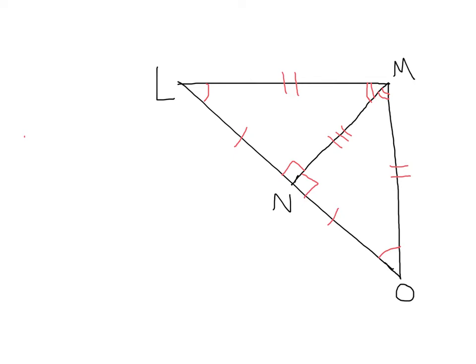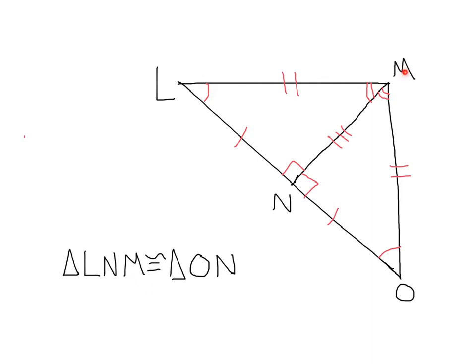Let's look at our two triangles. The triangle on the left is LNM. We want triangle LNM to be congruent to triangle — let's check. L has to match with O over here, because both have one congruent mark, so I'll start by writing O. Next, N is going to match with itself — N — because they're both right angles shared between the two triangles. Lastly, M is going to match with itself as well — angle M — because those each have two congruent marks. So triangle LNM is congruent to triangle ONM.